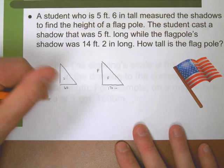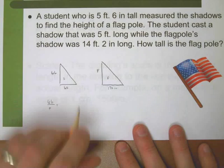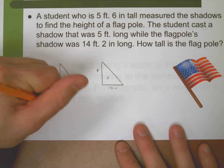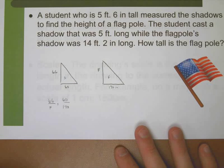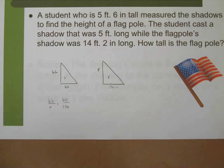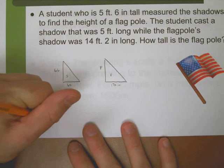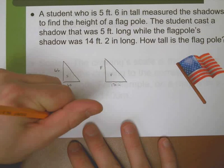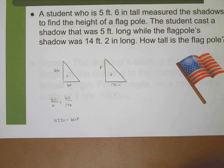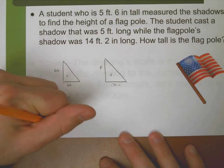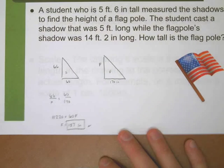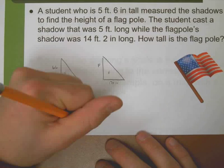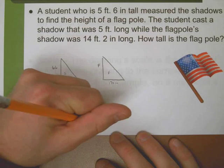I can set up a ratio. I can say 66 is to F as 60 is to 170. Cross multiply and let's solve - keep in mind everything is in inches. 66 times 170 is 11,220. That's equal to 60F. Let's divide out the 60. F is equal to 187 inches. Or, because it would probably be more appropriate to put it in feet, divide it by 12, and we have 15.583 feet.